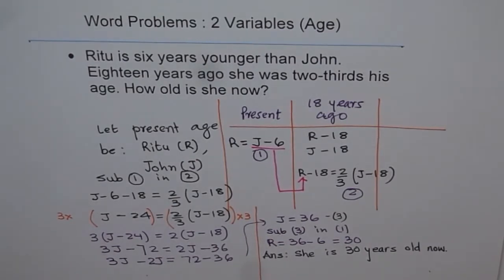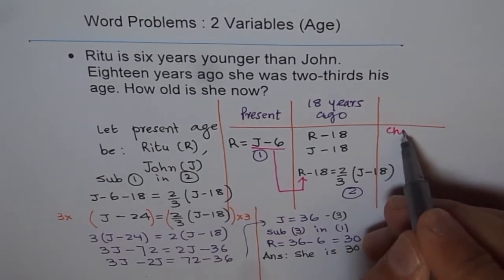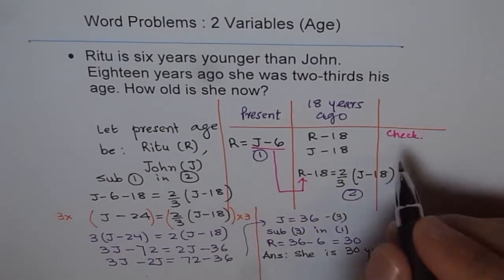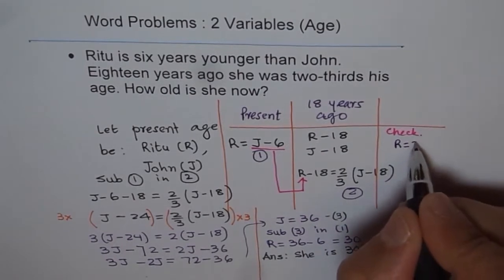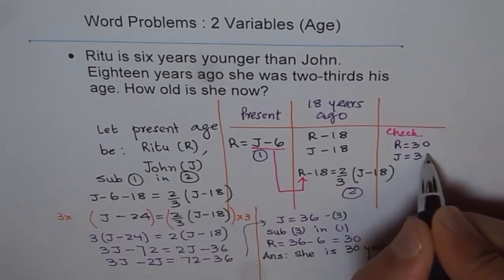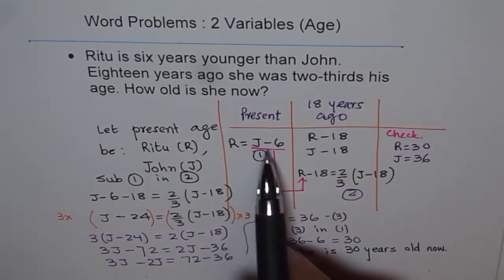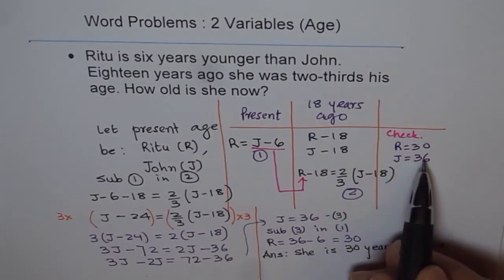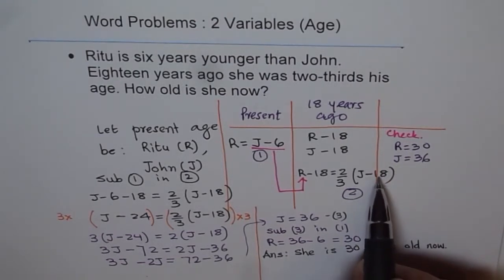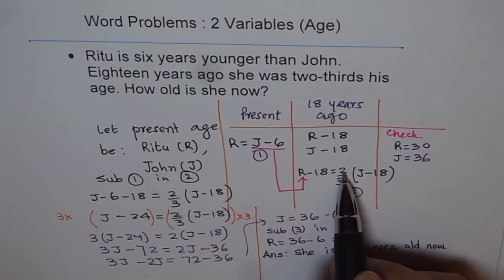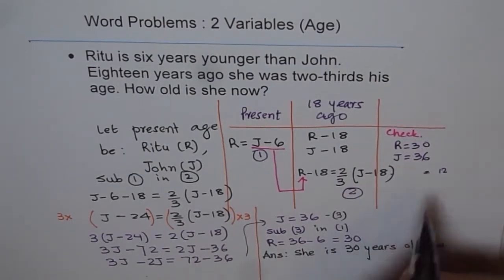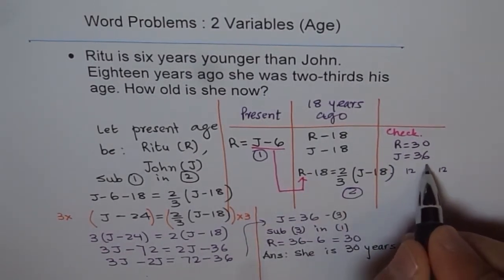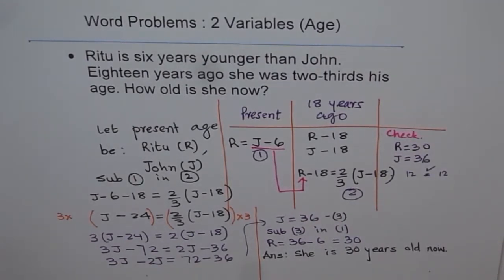Once you get the answer, it is good practice to check. Ritu's age is 30 and John's age is 36. Checking equation one: 36 − 6 = 30. Checking equation two: John 18 years ago was 36 − 18 = 18; two-thirds of 18 is 12. Ritu 18 years ago was 30 − 18 = 12. Both sides match, so the answer is confirmed correct.